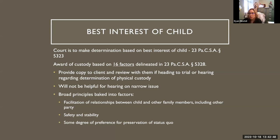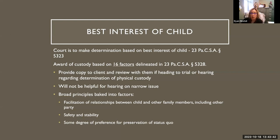There are a couple of broad principles baked into the factors worth discussing. One is the facilitation of relationships between the child and other family members — including the other party, extended family, and siblings. The court wants to see the child being able to connect with ideally all parties involved as well as their other family members, both immediate and extended. The court also places a high priority on the safety and stability of the child, both physical and emotional.